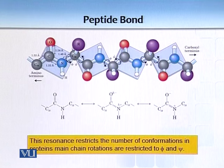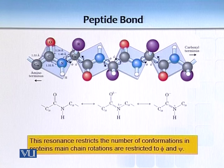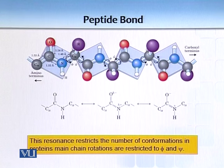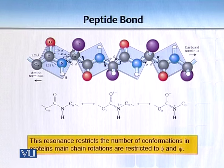Looking at a peptide bond, there are two bond angles: one is between the alpha carbon and nitrogen, and the other is between the alpha carbon and the carbonyl carbon. These are referred to as phi and psi angles. However, the peptide bond restricts rotation due to the resonance structure.